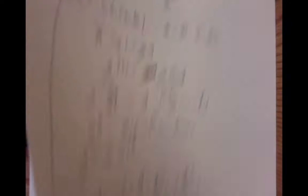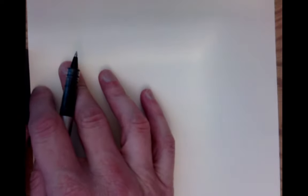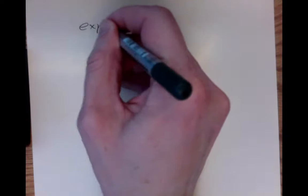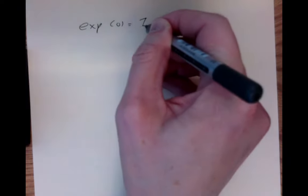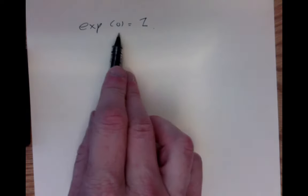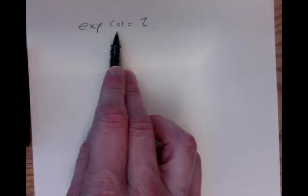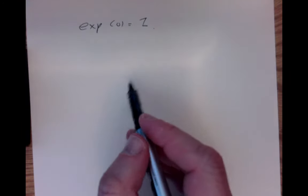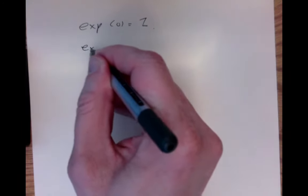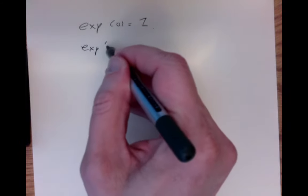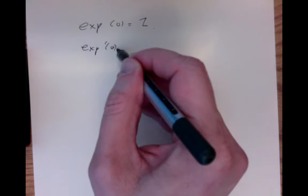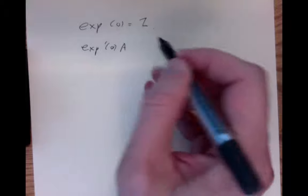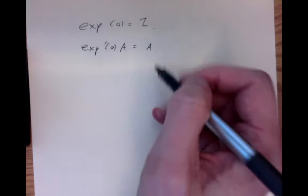A trivial observation is that the exponential of 0 is the identity, because by definition if you flow for zero time you stay where you were. The less obvious fact is that the derivative of the exponential map at 0 assigns to any vector that same vector — which I'll leave you to check by unwinding the definitions.